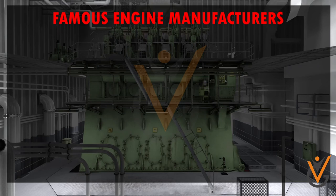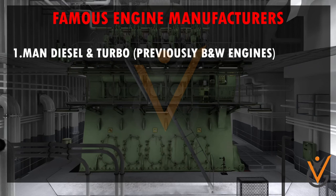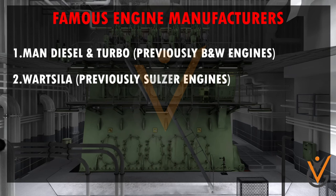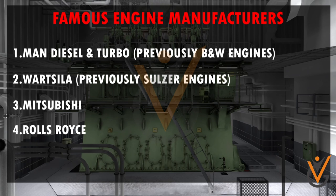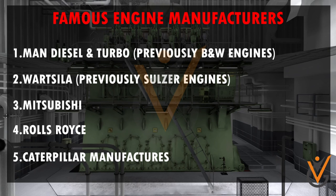The most famous marine engine manufacturers are: MAN Diesel and Turbo, previously B&W engines, famous for high, medium, and slow-speed marine engines; Wärtsilä, previously Sulzer engines, also famous for high, medium, and slow-speed marine engines; Mitsubishi, producing engines for light, medium, and heavy-duty applications; Rolls-Royce, famous for cruise ship and naval ship engines; and Caterpillar, which manufactures medium-speed and high-speed marine diesel engines.